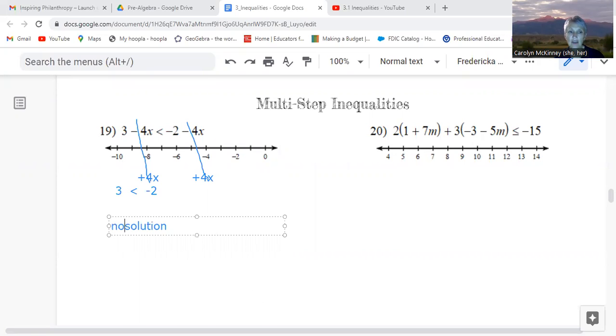If instead it had been a true statement, if that symbol had been going the other direction, then we could have said all real numbers and we would have shaded the entire number line. We do not need to shade anything on the number line because there aren't any numbers that make this true.